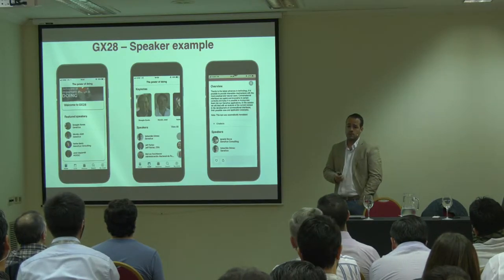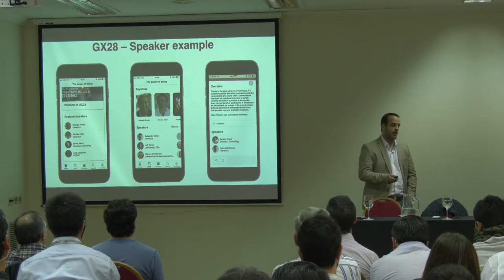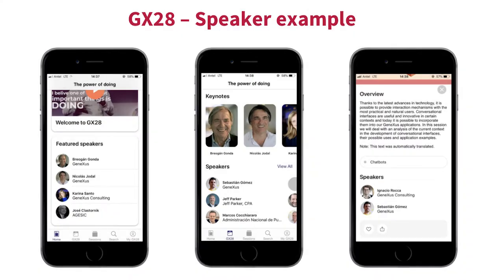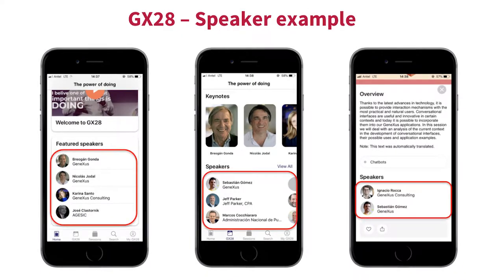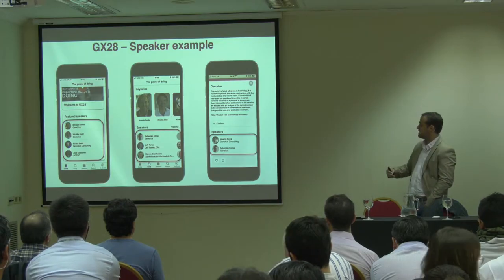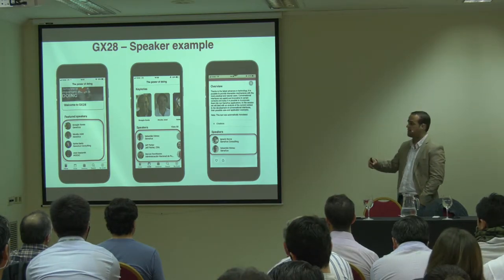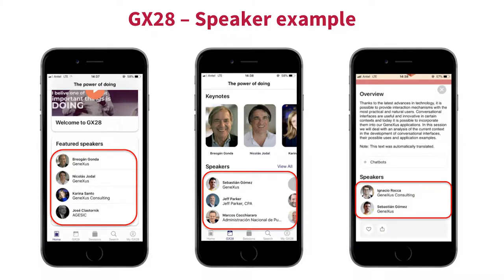In what cases am I going to use a stencil? A very clear example is the app in this event where we use this new object. We've got three screens here: on the left-hand side we've got the favorite speakers, the second one shows a full list of speakers, and the third one shows a detail of one talk in particular, showing those speakers in charge of that lecture.